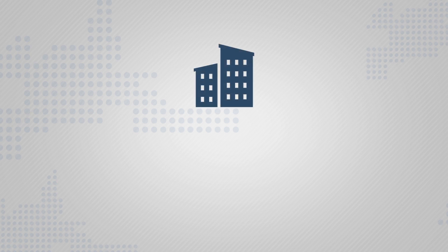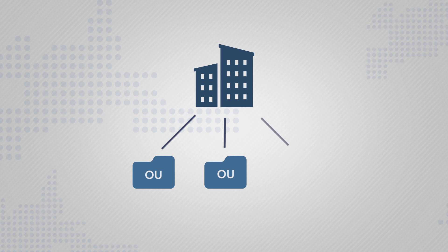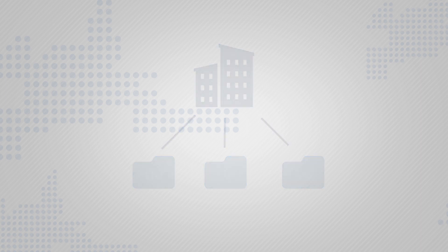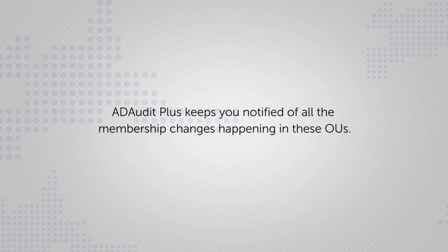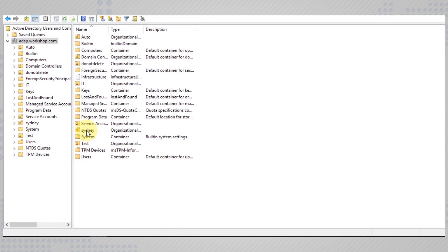As your organization grows, more branch offices are opened and new departments are included. Naturally, these divisions will reside as organizational units in your Active Directory. You as an administrator should remain informed of the users created in these organizational units. AD Audit Plus keeps you notified of all the membership changes happening in these OUs.